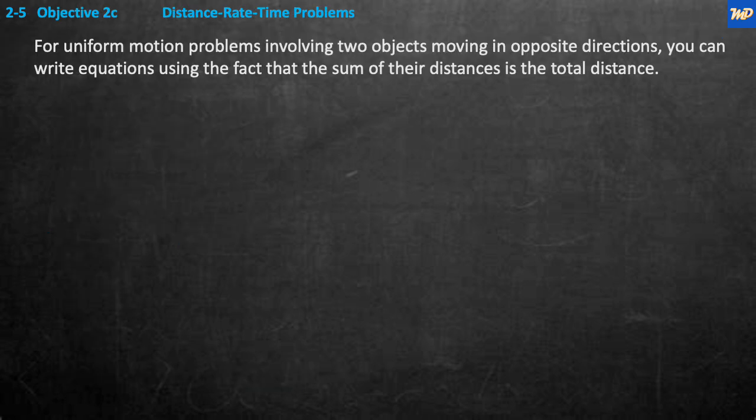Objective 2C: distance, rate, and time problems. For uniform motion problems involving two objects moving in opposite directions, you can write equations using the fact that the sum of their distances is the total distance — however far vehicle one traveled plus the distance vehicle two traveled equals the total distance.